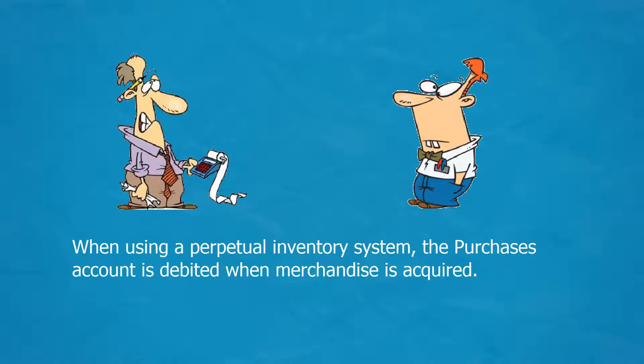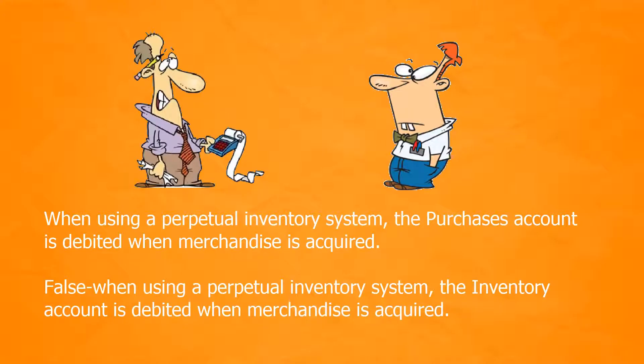When using a perpetual inventory system, the purchases account is debited when merchandise is acquired. False. When using a perpetual inventory system, the inventory account is debited when merchandise is acquired.